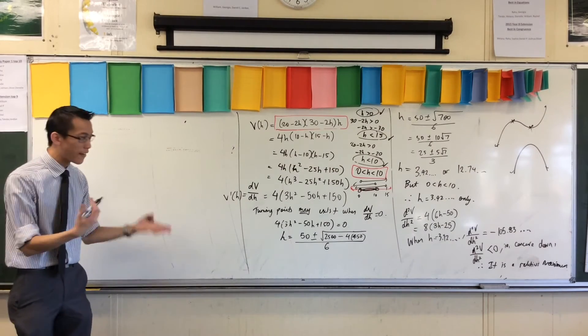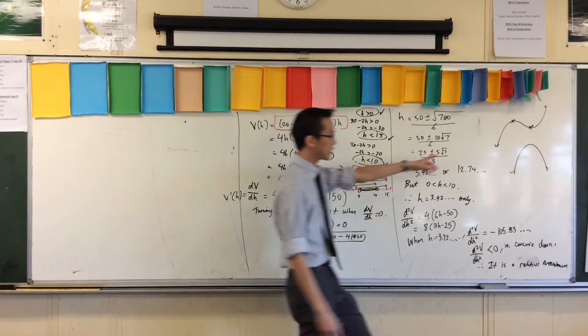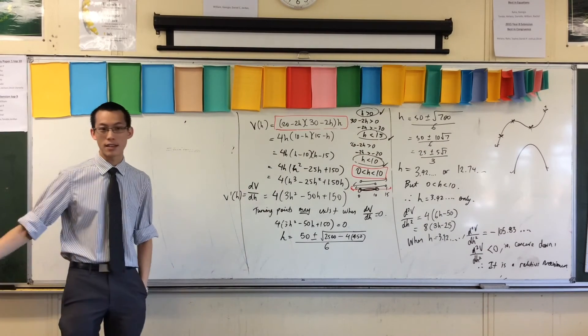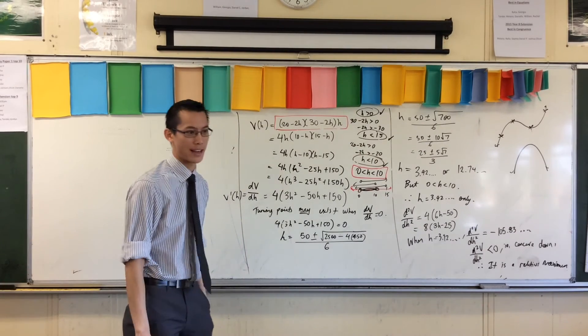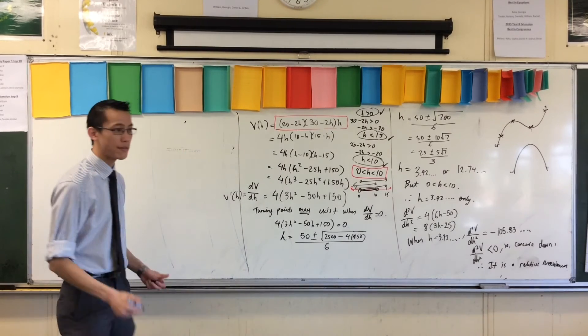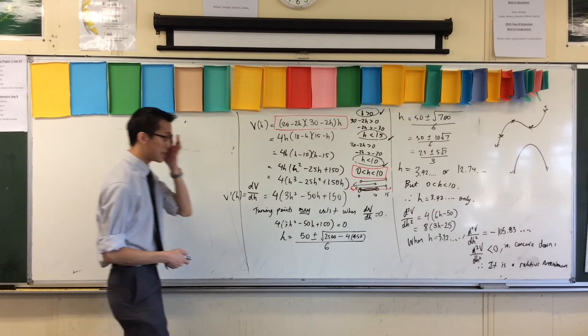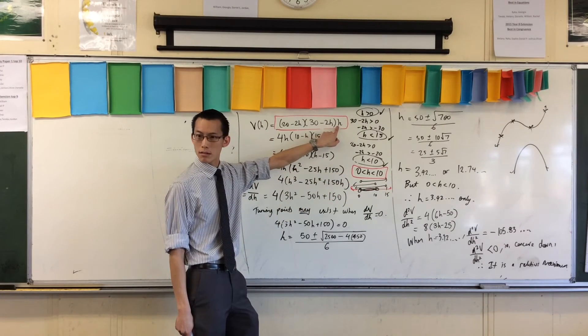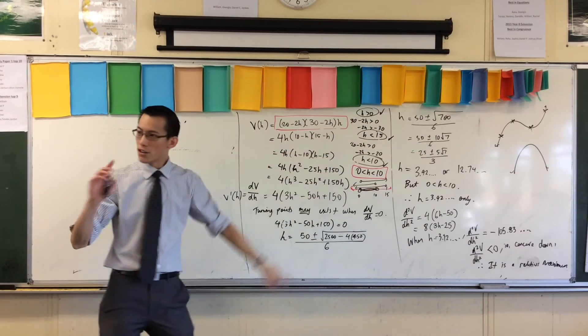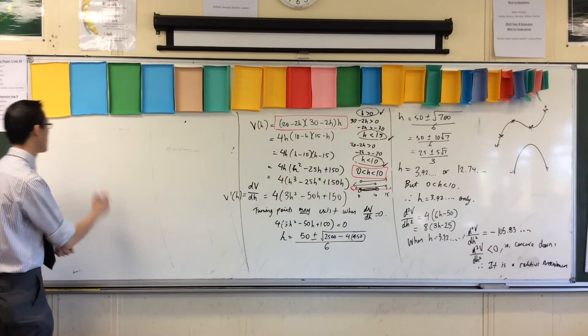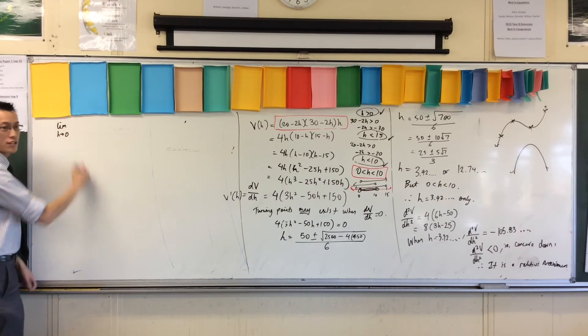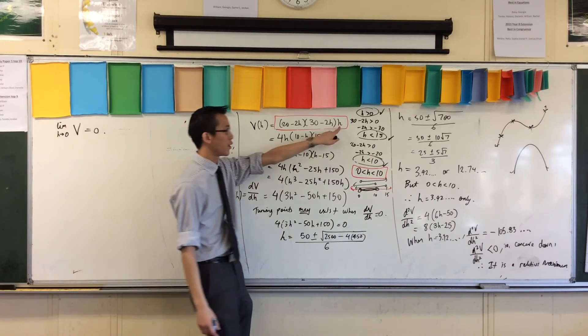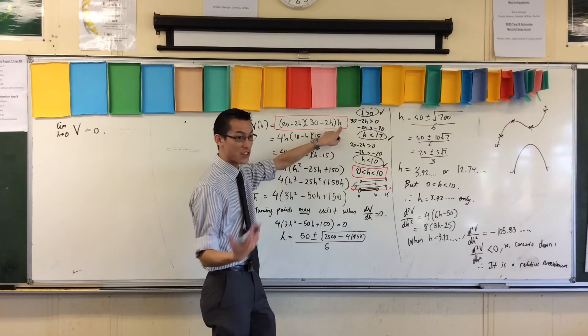So, what I need to establish is that not only is it a relative maximum, but it's the actual maximum. See that? Now, have a look. I have a domain restriction. You can see for 0 and 10 what's going on here. When you pop in 0, what happens to this? It becomes all 0. Now, note, I can't actually have the height being 0, so I have to use this. The limit, as H approaches 0, of the volume, it's going to be 0, because this guy is going to tend towards 0. You see that? So, therefore, that's not going to give me a maximum.